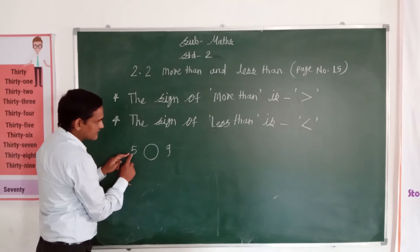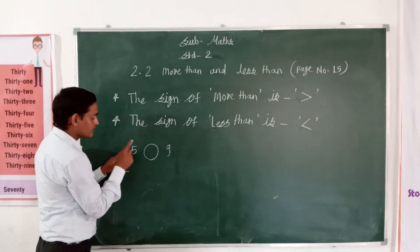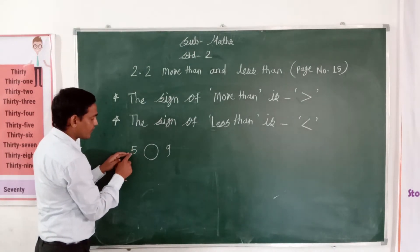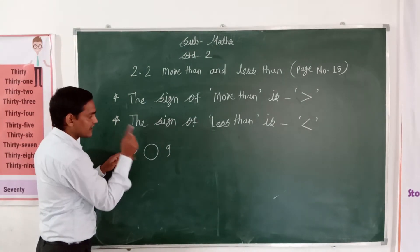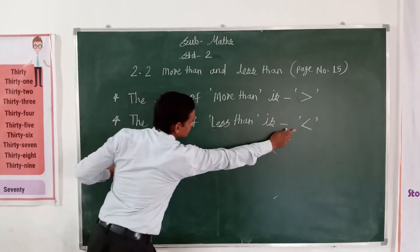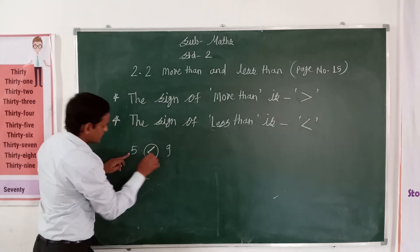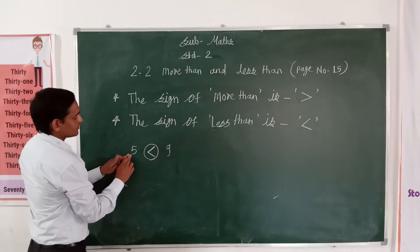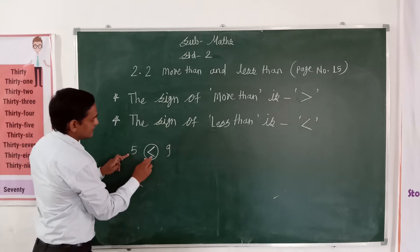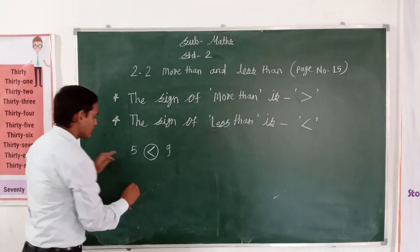Okay, less than sign — why? Because 5 is the less number, so we use the less than sign. Write down here: 5 is less than 9.